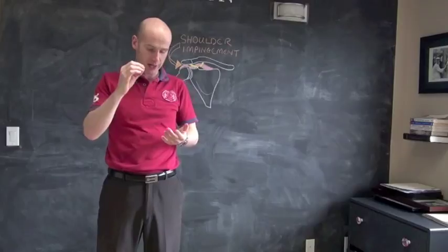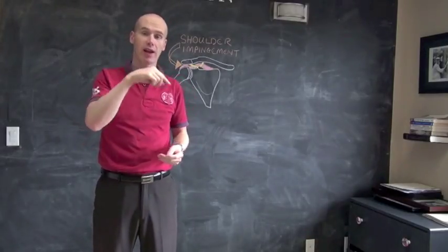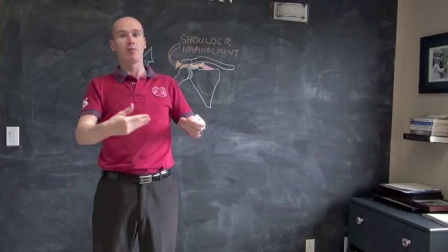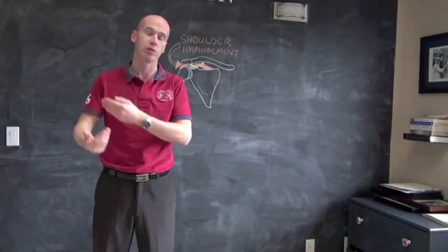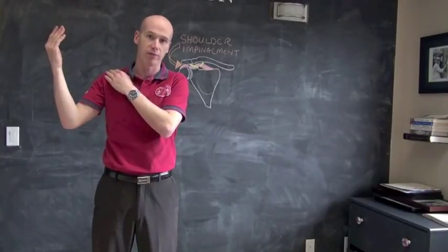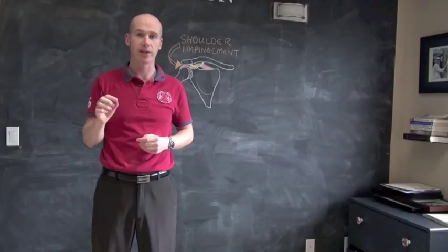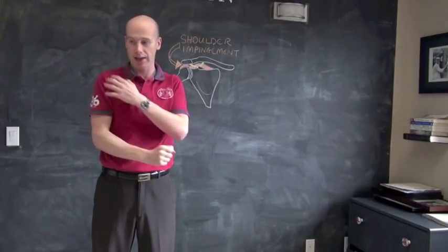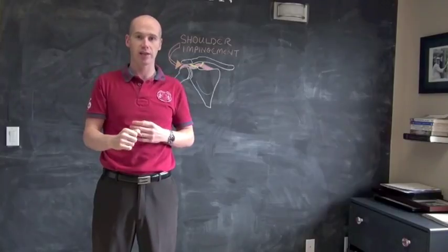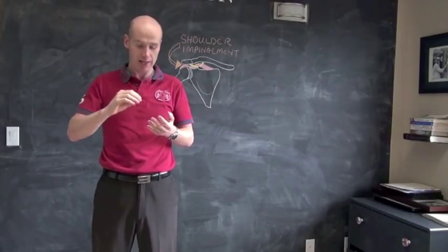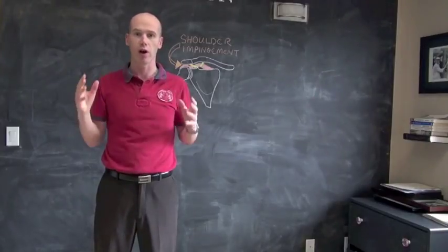So the solution for them is to actually work on the left ankle, which will then put the pelvis in the right place, which will then allow the back to be in the right place, which will then take away the impingement from the shoulder. So what I want you to take away from this is that rehabbing the actual injury itself with internal external rotation exercises or cortisone shots, that can work. But in cases where it doesn't, you've got to look wider.